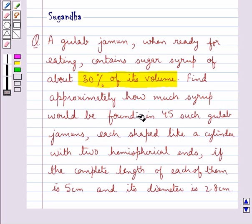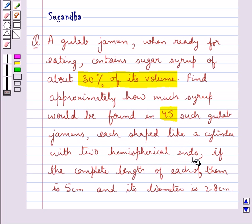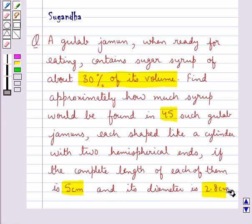Find approximately how much syrup would be found in 45 such gulab jamuns, each shaped like a cylinder with two hemispherical ends, if the complete length of each of them is 5 cm and its diameter is 2.8 cm.